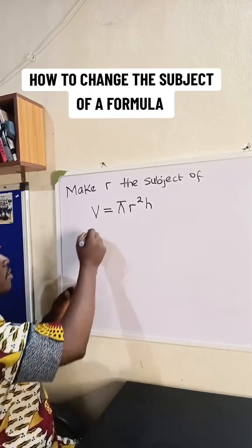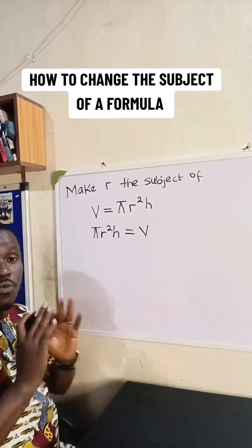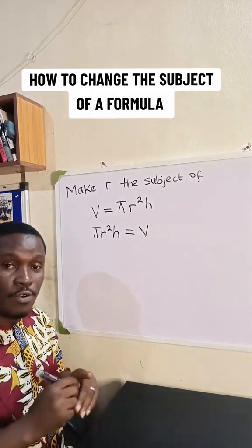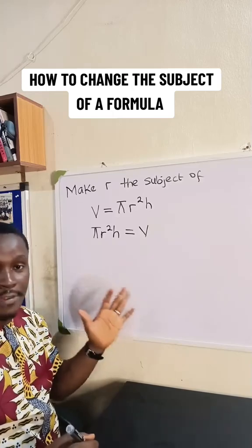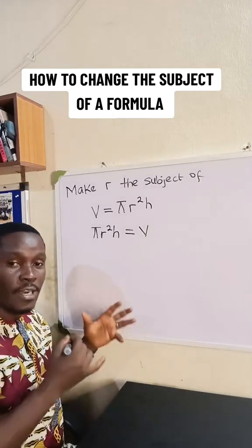So this is going to be pi r squared h is equal to V. So once you do that, the value you want to make the subject is already on the left side. But there are some values that accompany it on the left.